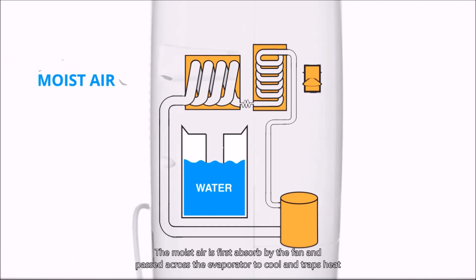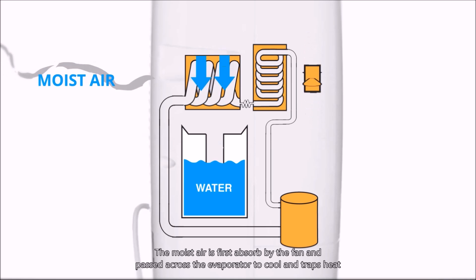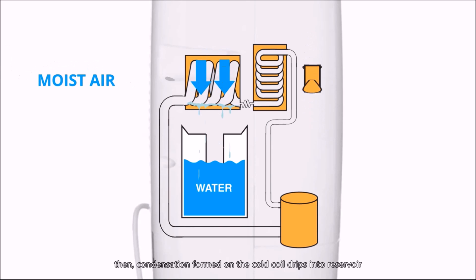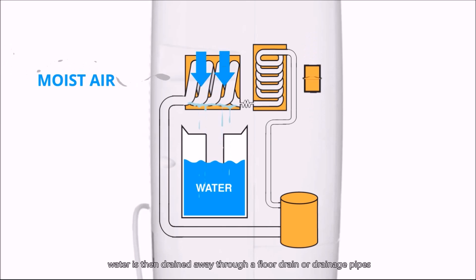Moist air is first absorbed by the fan and passed across the evaporator to cool and trap heat from warm moist air. By the cooling process, it becomes cool saturated air. Then condensation forms on the cool coil and drips into the reservoir. Water is then drained away through a floor drain or drainage pipe.